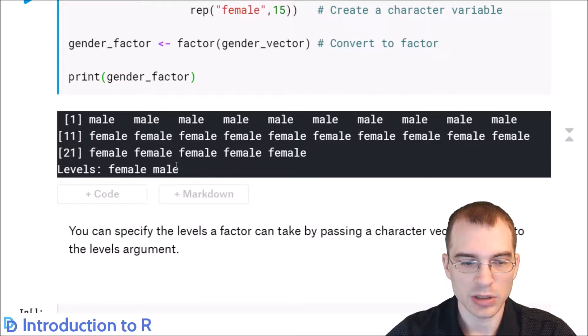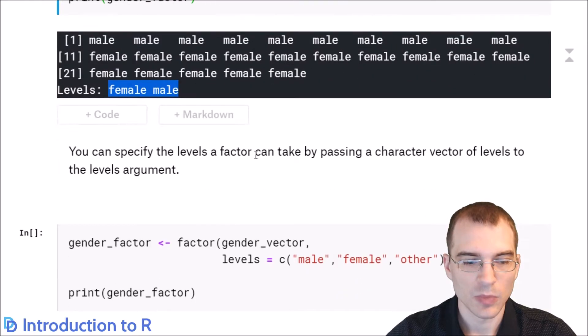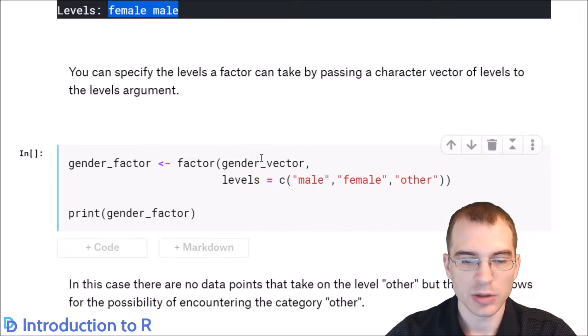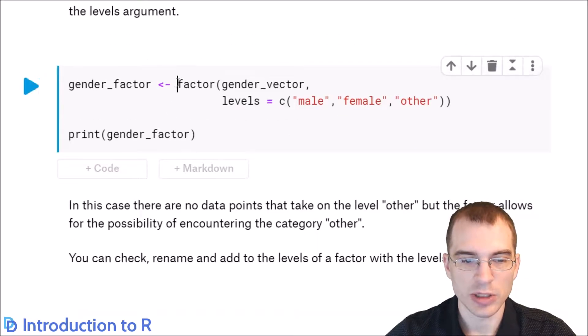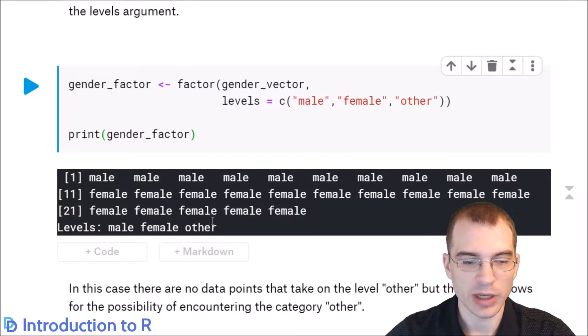You can see it is a factor with the levels female and male. Now you can specify specific levels for the factor with the levels argument when you create it. So for instance, in this construction, we're creating the same factor from that vector, but we're also specifying we want the levels to be male, female, and other. We're not actually passing in any values of other, but this construction allows for there to be perhaps new values added that have this category, even though it's not being used. So if we run that, we can see this new factor level other has been added there.